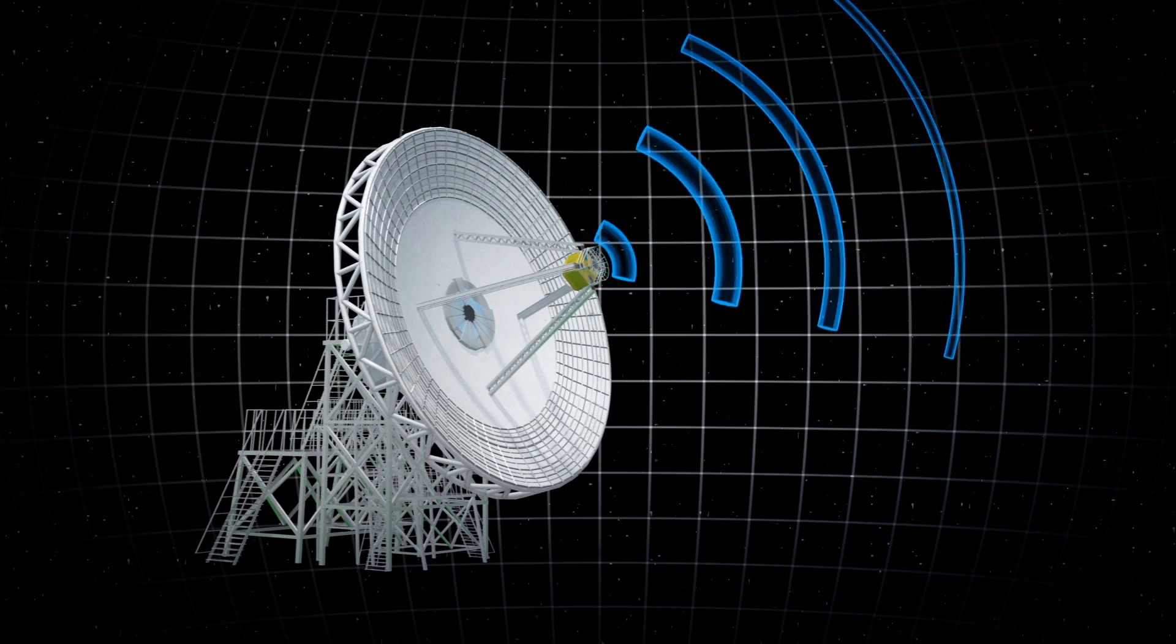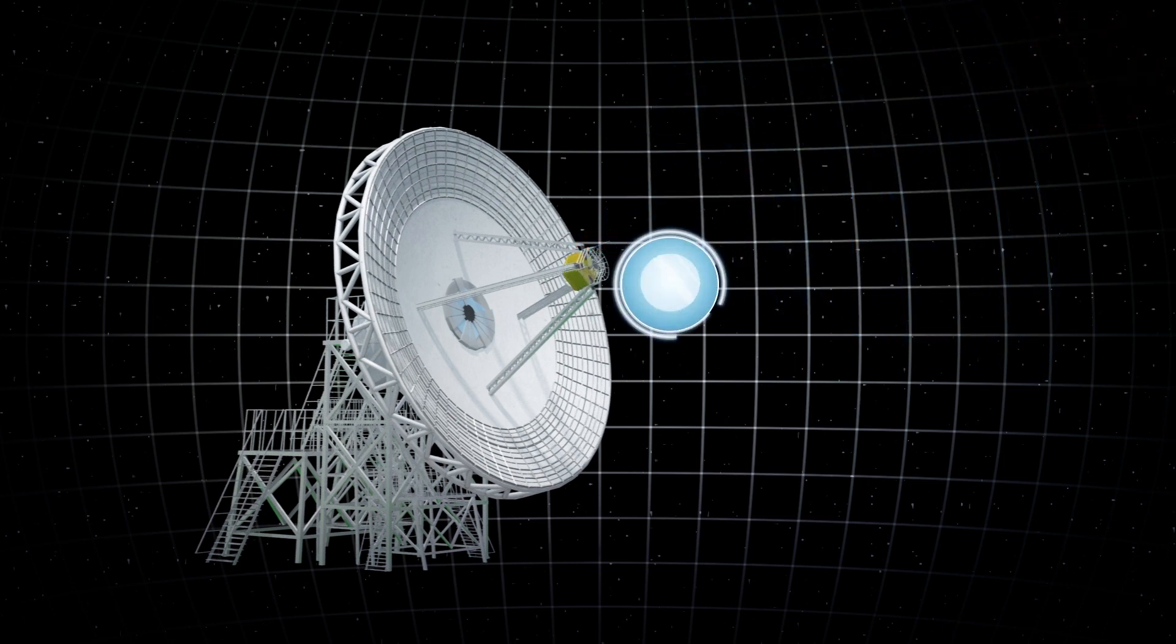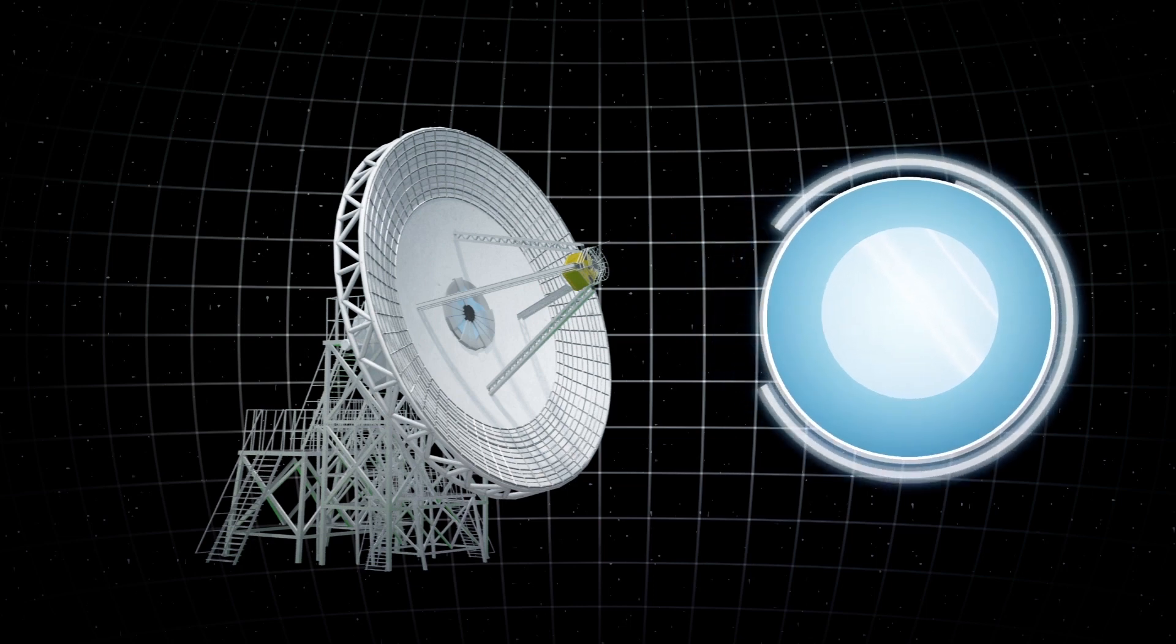Deep Space Station 23 will operate as a radio antenna and will also be equipped with mirrors and include a special receiver for laser beams.